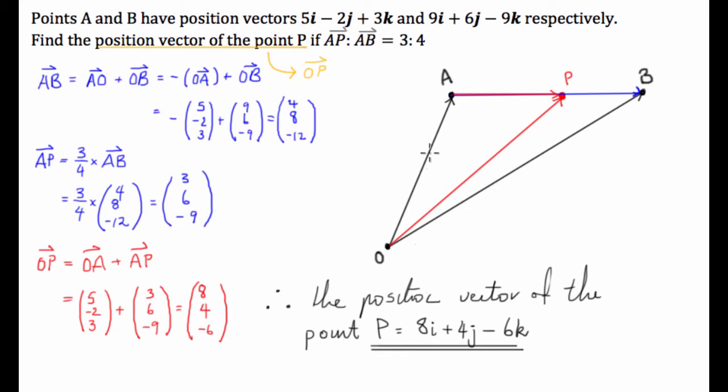So, what I then did is I used this diagram to figure out how I was going to work out AB and how I was going to work out AP. And then from there I was able to work out how I would figure out OP using OA and AP. So, I find drawing a quick diagram the most effective way of solving these sort of problems because it makes the vector additions a lot simpler to visualize.